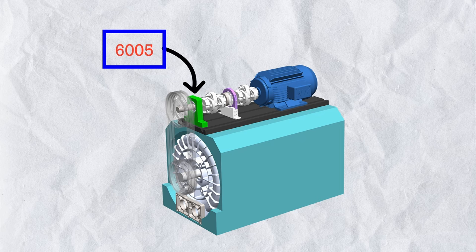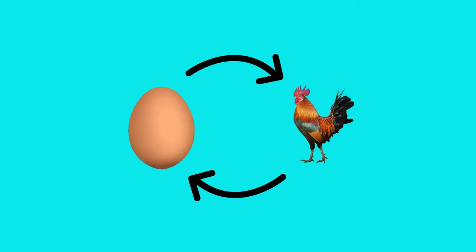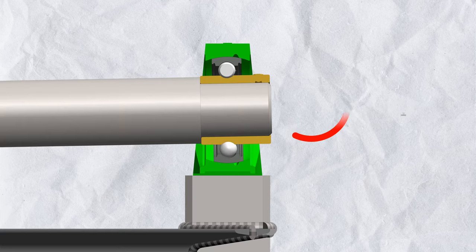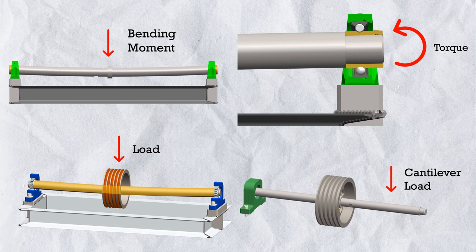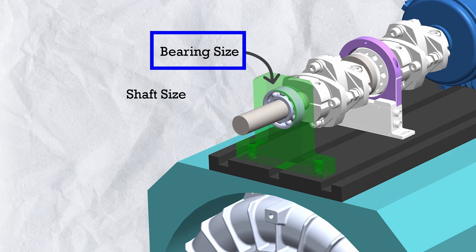A key question: should we select the bearing size based on the shaft diameter, or the shaft diameter based on the bearing? The shaft diameter should be based on required strength — cantilever load, bending moment, or torsional stress from applied torque. We can also use past experience. For bearing size, start with the same diameter as the shaft. If the bearing size needs to increase after life calculation, increase the shaft size accordingly.